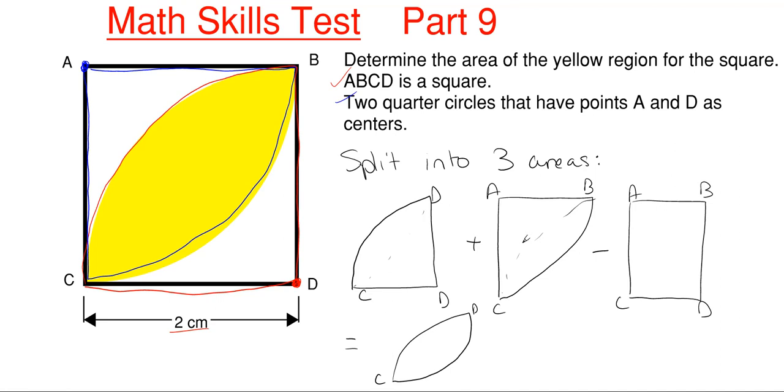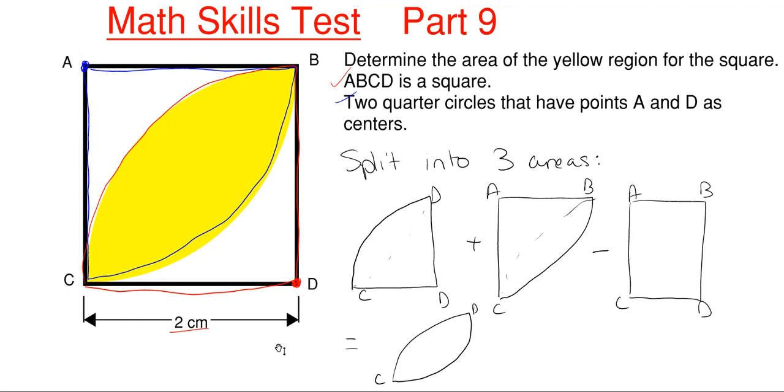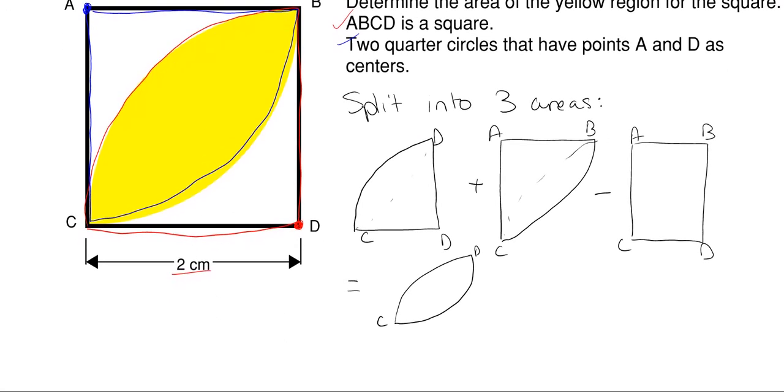We have to determine the area for the quarter circles and the area for the square. We know this is a square, so all sides are two centimeters, which means the radius for my quarter circles is two centimeters for each one.